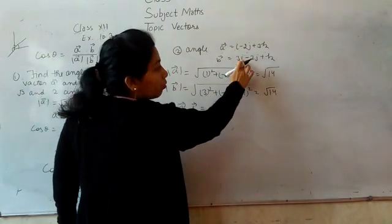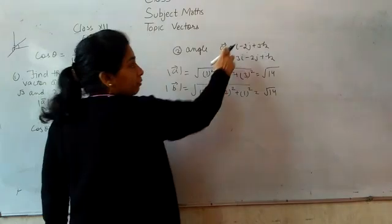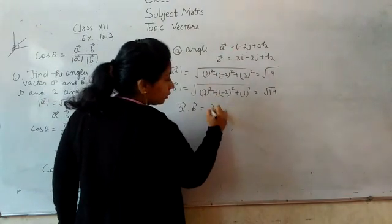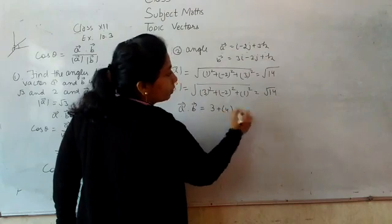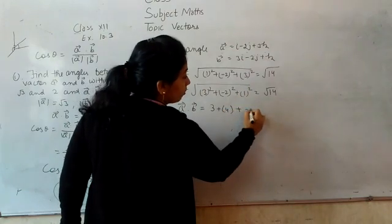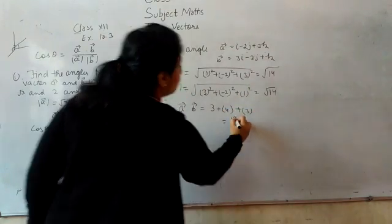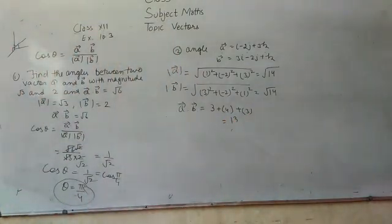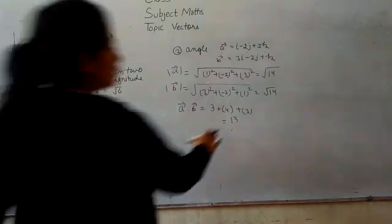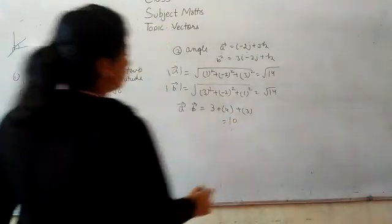The coefficient of i times the coefficient: 1 into 3 is 3. Plus, j coefficient times j coefficient is 4. This is the same thing. Plus k coefficient: 9 times 1 is 9. So we have 3 plus negative 8 is negative 5, plus 9 is 4. 3, minus 5 is negative 2, 7 and 3 is 10.